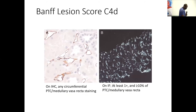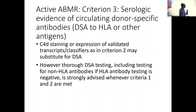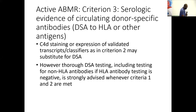We look for circumferential staining on immunohistochemistry. There is a scoring system for immunofluorescence, though immunohistochemistry is much easier to interpret because you can see the architecture of the tissue. The third criterion is serologic evidence of circulating donor-specific antibodies to HLA in most cases, or to other antigens; you can also use validated transcripts. Importantly, positivity for C4D can actually substitute for criterion three — and ideally we should simplify this so that C4D or serologic confirmation of DSA is clearly understood as sufficient.